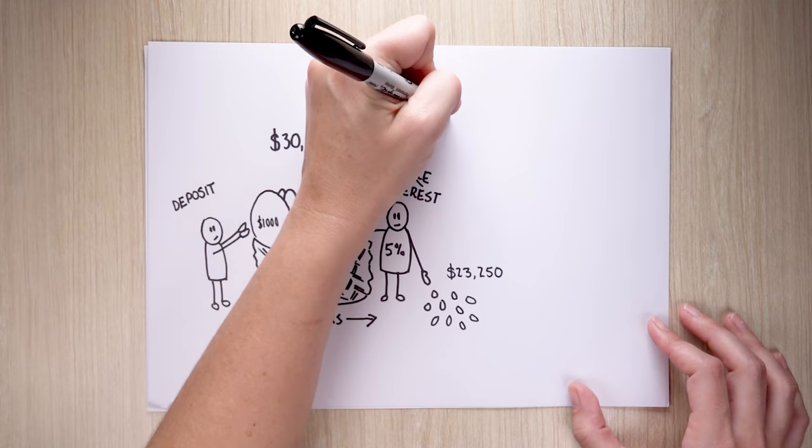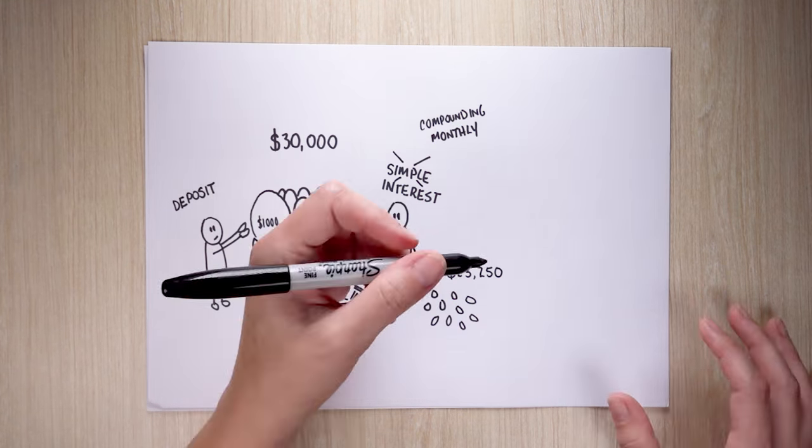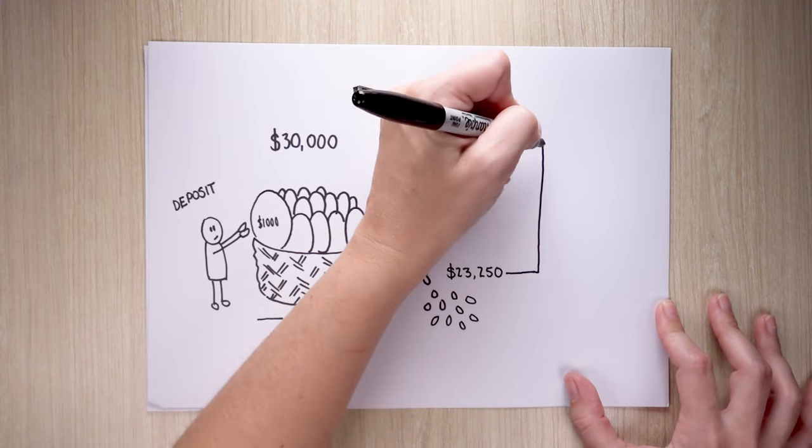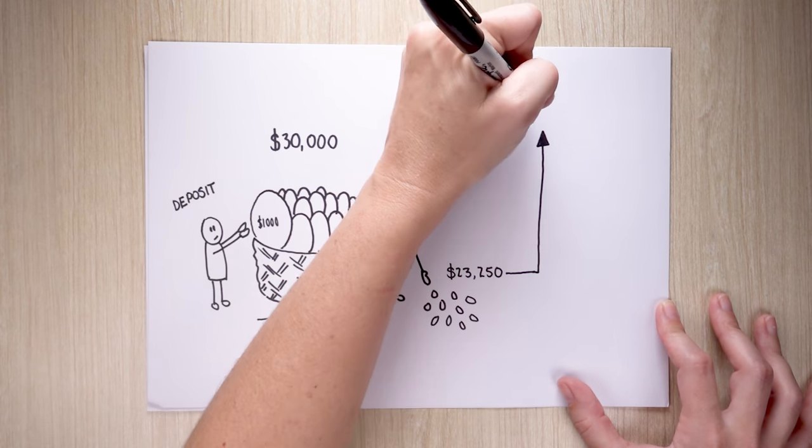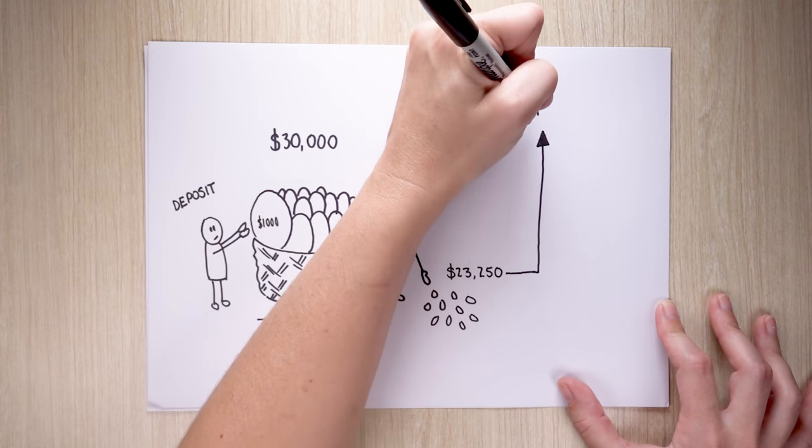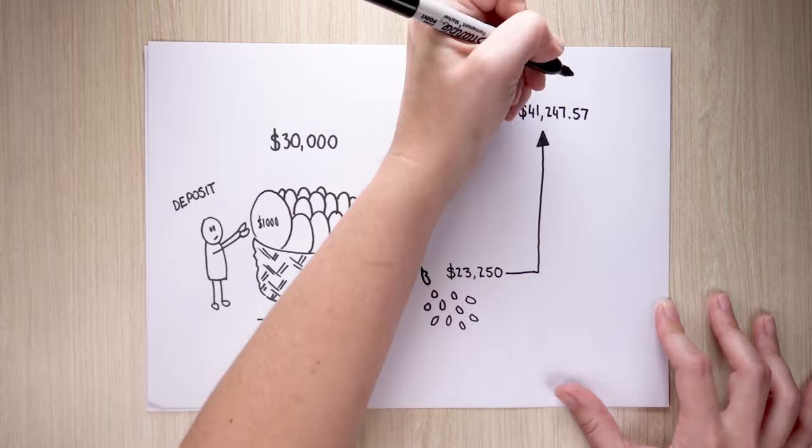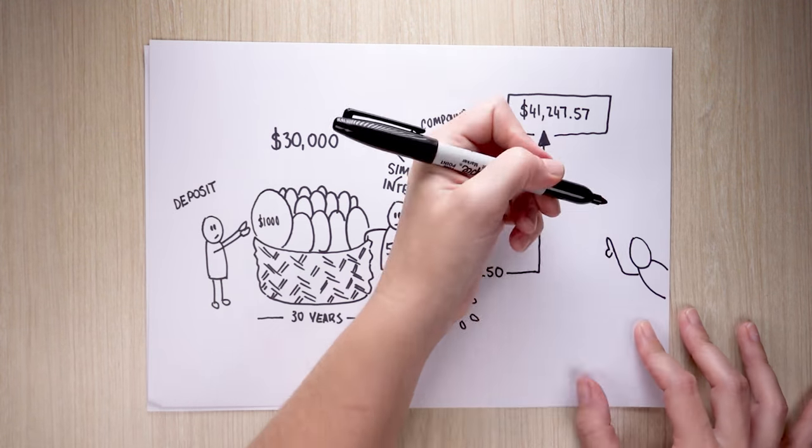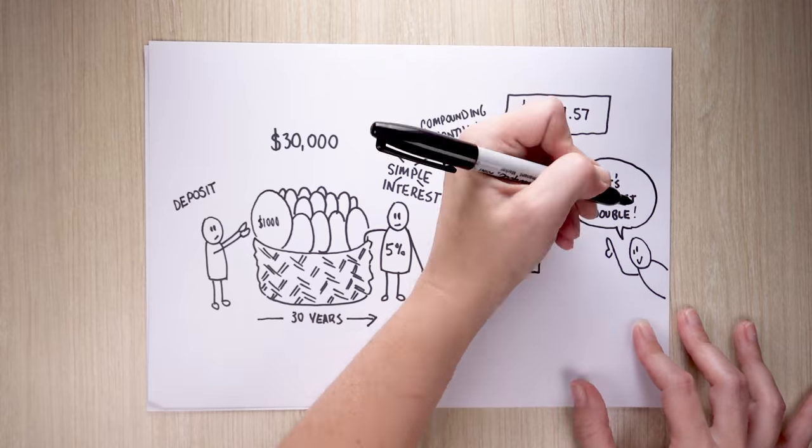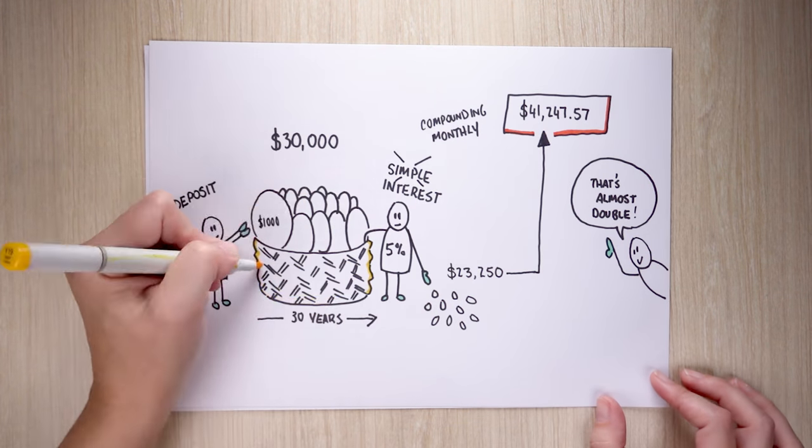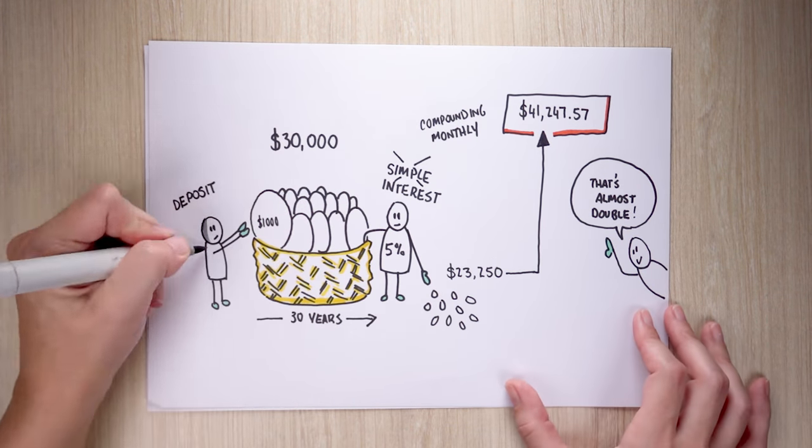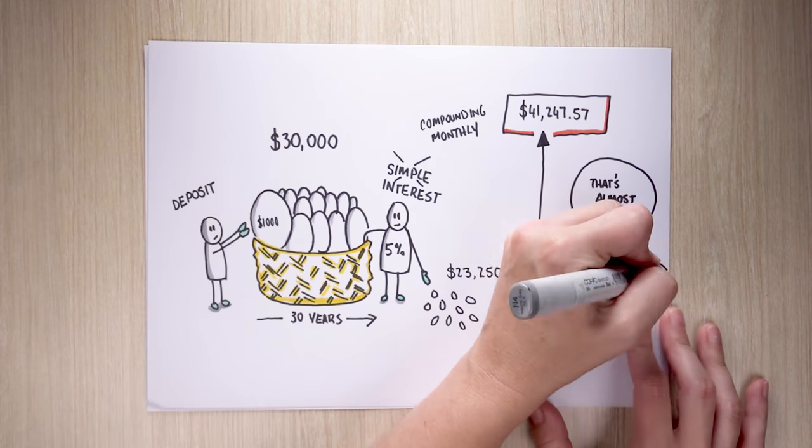If you made the same investment with interest compounding monthly, with the same savings and 5% interest rate over the same 30-year period, your interest earned would increase to $41,247.57 with a total balance of $71,247.57. That's almost double the amount of interest earned when compared with our simple interest example.